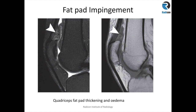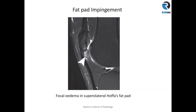Fat pad impingement — there are a couple of more common types. The Cordyceps fat pad: normally it has the same signal intensity as the rest of the fat around the knee joint and is not thick. In fat pad impingement, you get Cordyceps fat pad thickening, edema, and signal change suggesting impingement, which may be the cause of the patient's anterior knee pain. Another cause of anterior knee pain is supralateral Hoffa's fat pad impingement, also known as patellar tendon-lateral femoral condyle impingement, where you get edema, reaction, and thickening in the supralateral corner of Hoffa's fat pad as demonstrated by the arrowhead. You can also see mild edema in the inferior pole of the patella, which may be mechanical or stress induced.